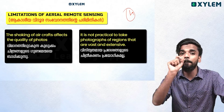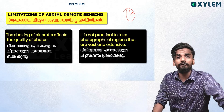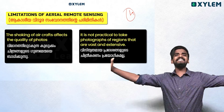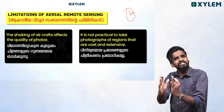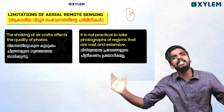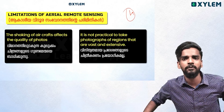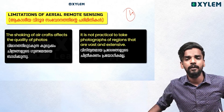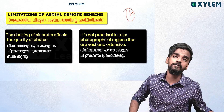It is not practical to take photographs of vast, extensive areas. This is a big limitation of aerial remote sensing. There is a big variety of difficulties with aerial photos.